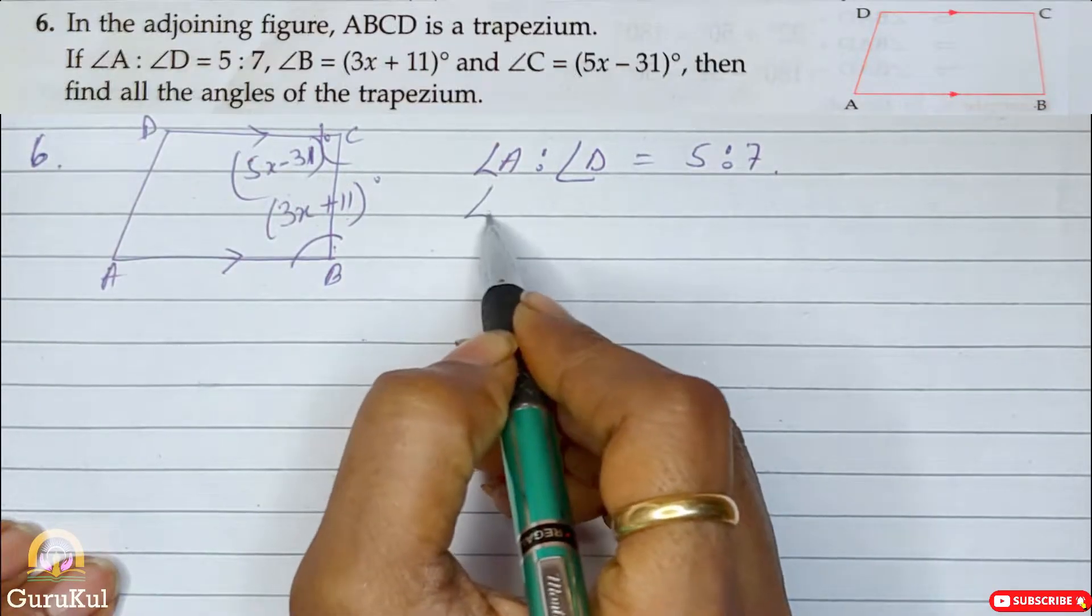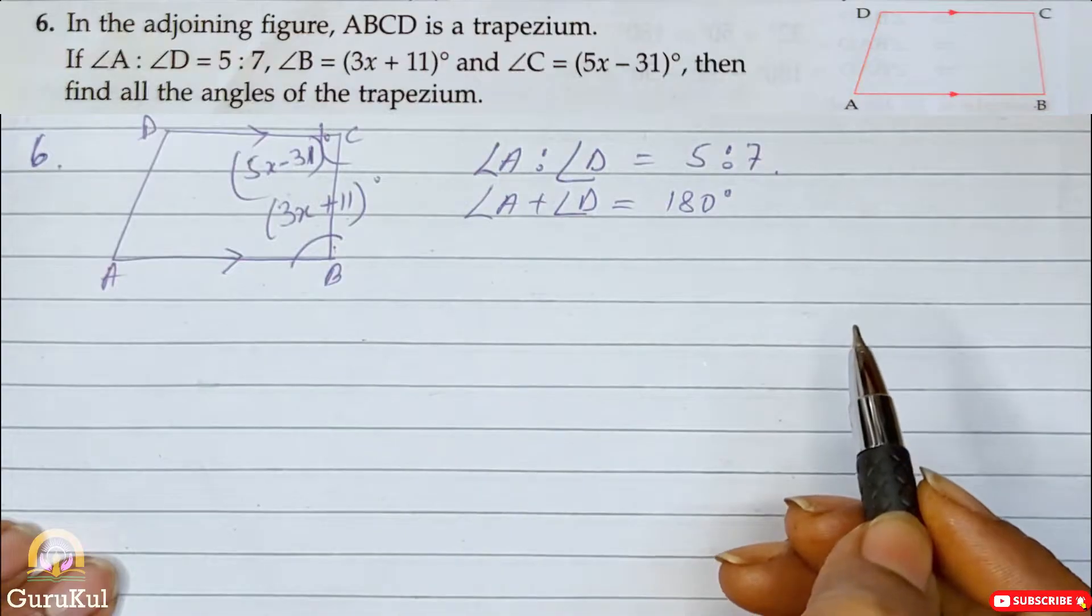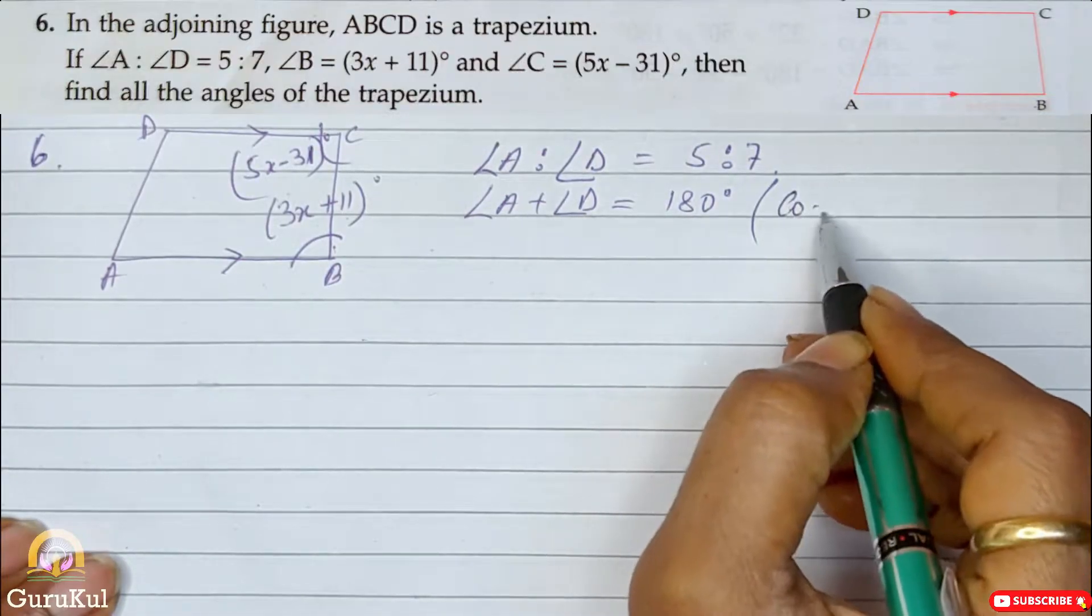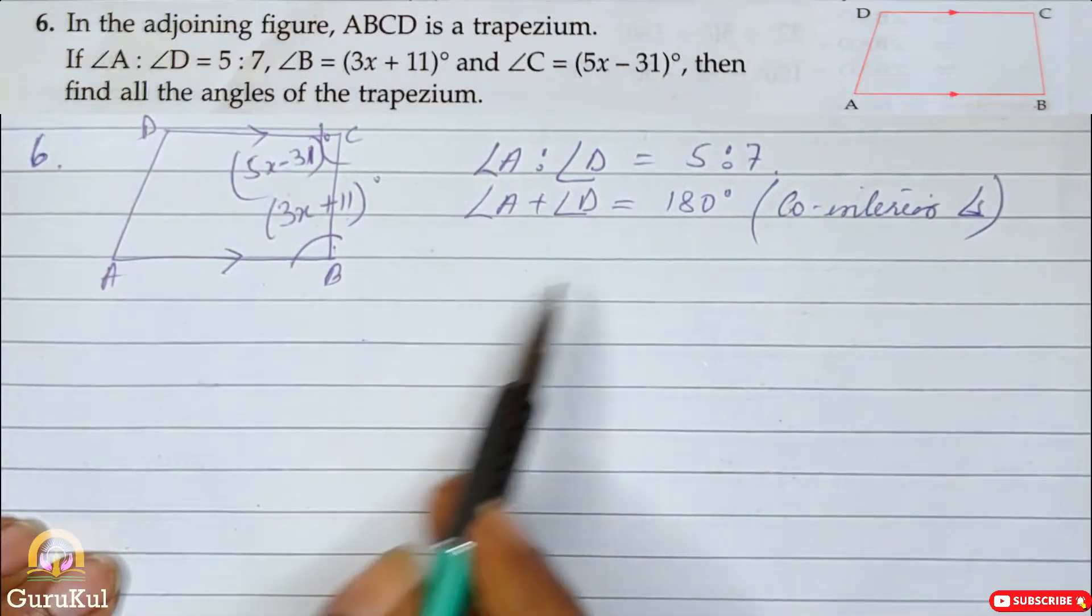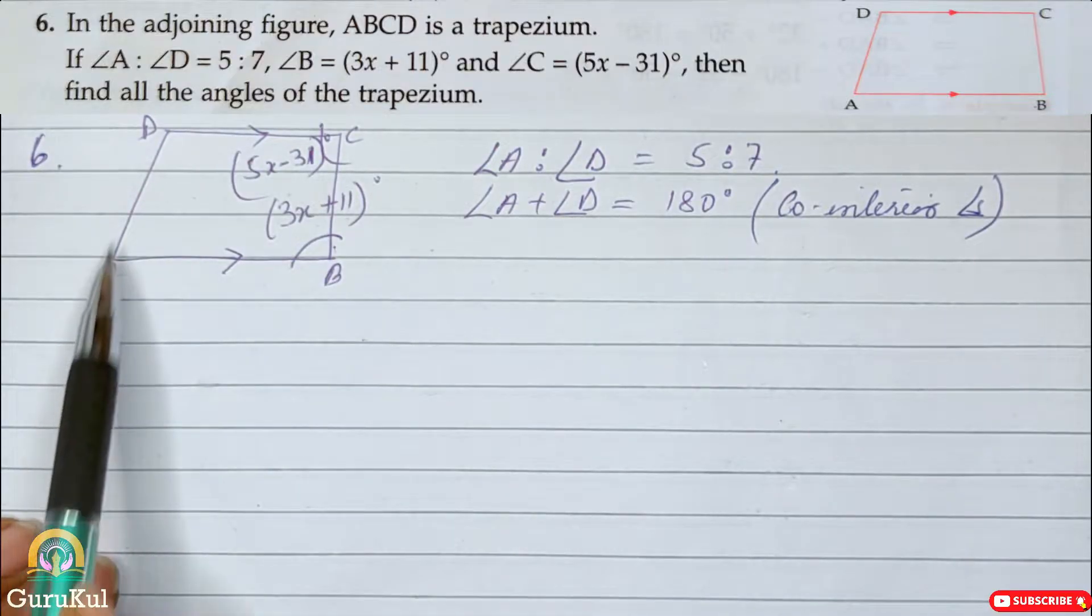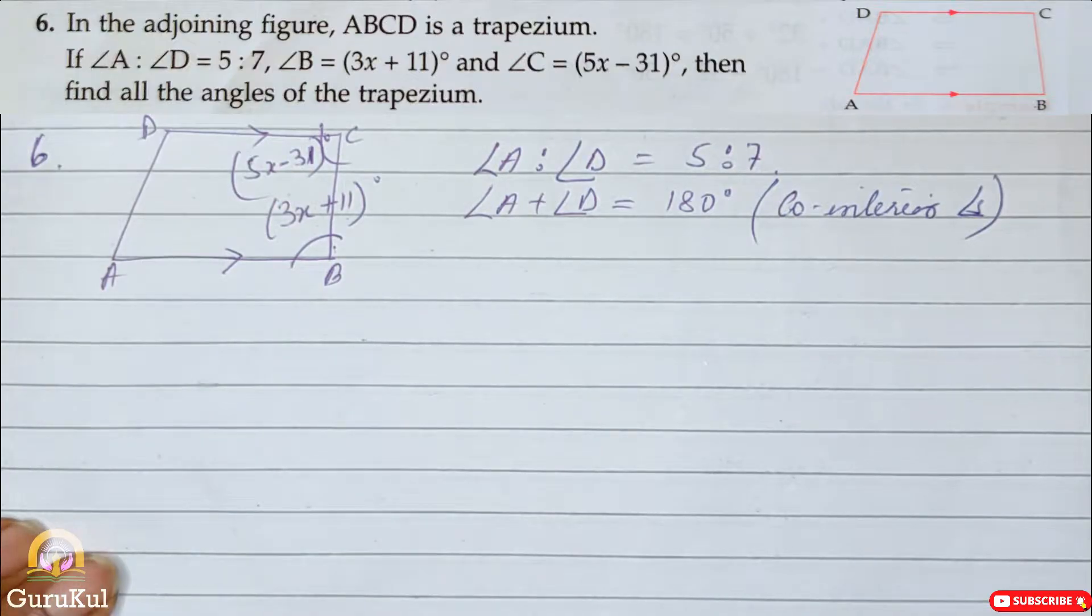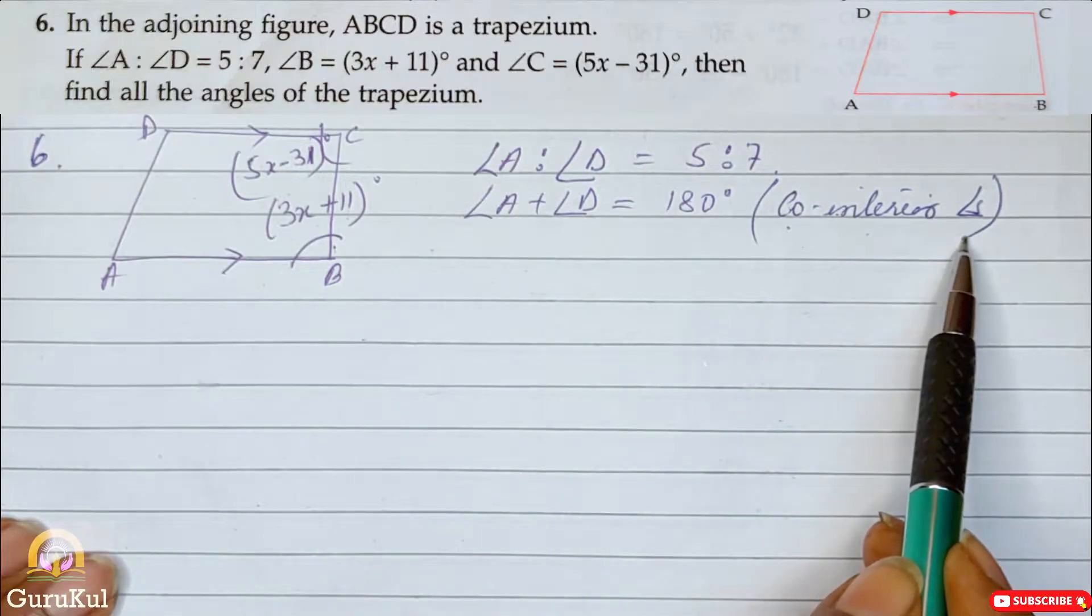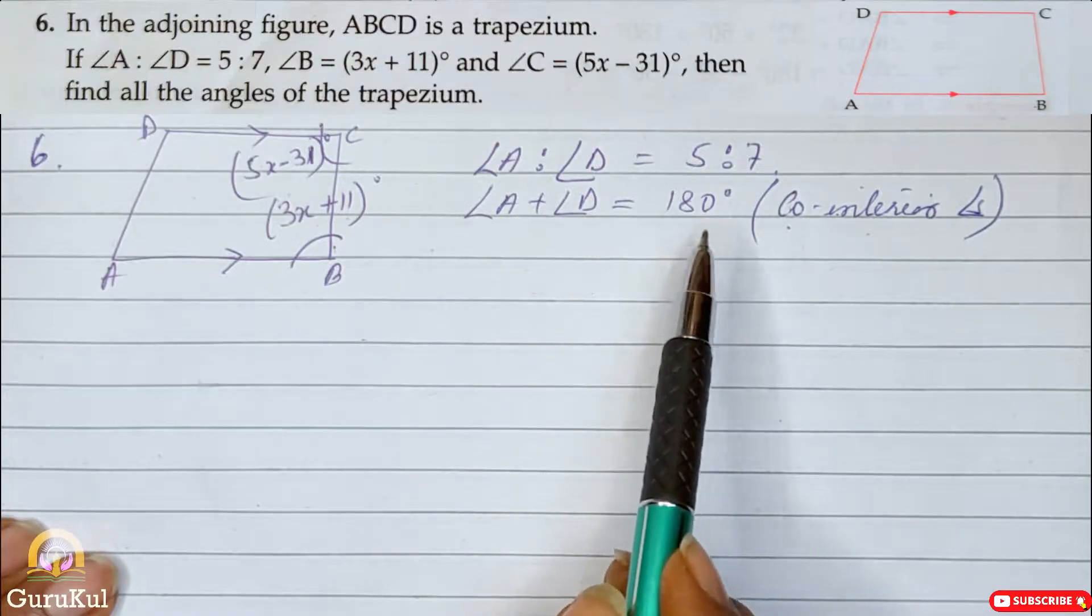First of all, angle A plus angle D is equal to 180 degree. Now, what is the reason we will give? Co-interior angle. Now let me explain. As you can see, AB is parallel to DC. Now this AD is a transversal line. And angle A and angle D, they lie on the same side of the transversal line but between the two parallel lines. Hence, it is co-interior angle. When we add them, it should always come to 180 degree.